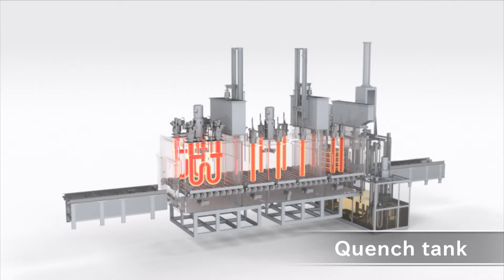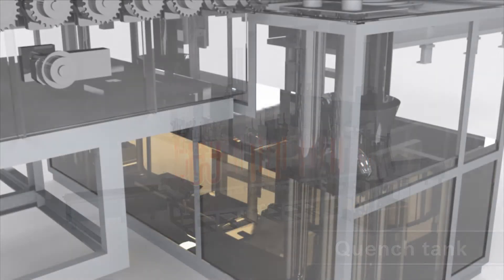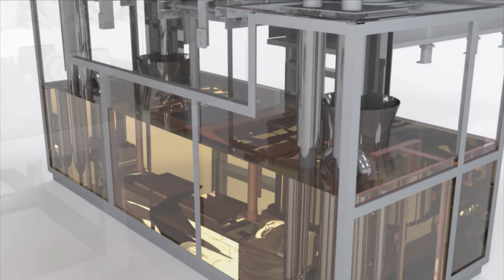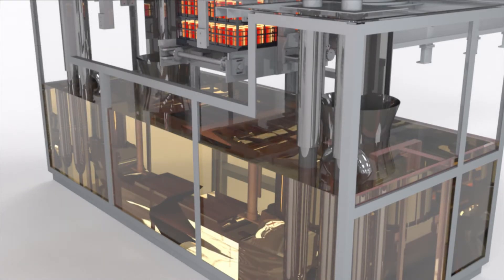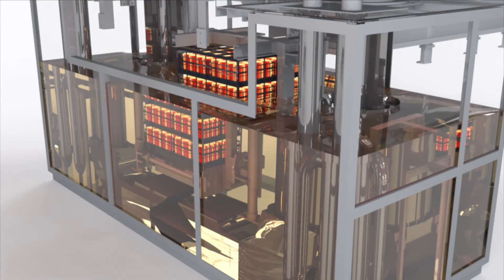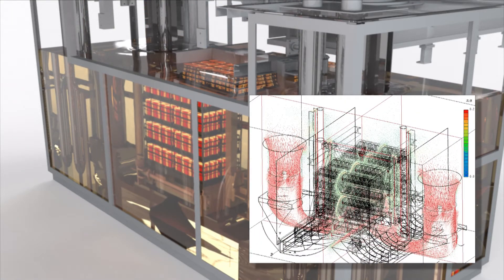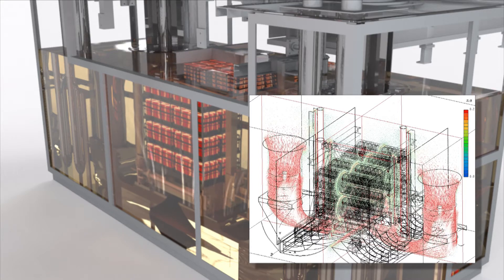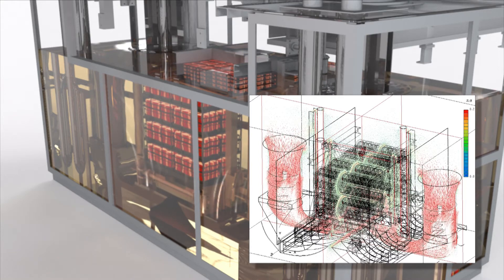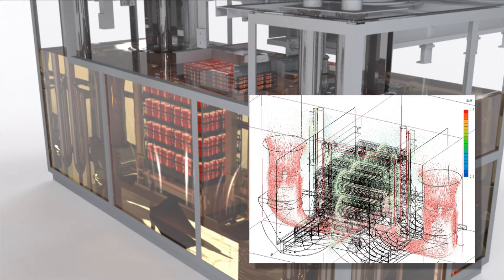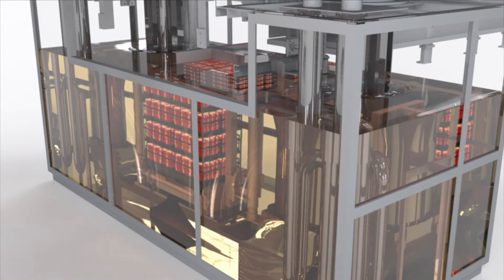And finally, the product goes into the quench tank. Here, to prevent quality fluctuations due to quenching, the system first checks oil circulation by simulation and ensures an optimum process.